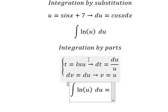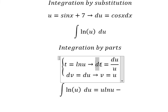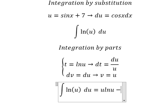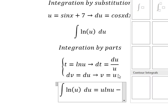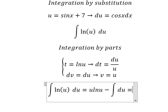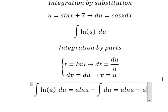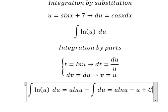So we have t multiplied by v minus the integration of dt multiplied by v. We have u divided by u, which gives us 1. The integration of du will give you u, and I will put the constant c.